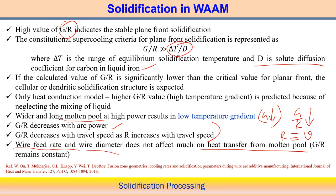Overall, we can see the impact of the most important parameters in wire arc additive manufacturing. Based on that, we can determine the G/R ratio and — similarly to what we discussed for powder-based technology — we can predict the different types of solidified structures that prevail in wire arc additive manufacturing.